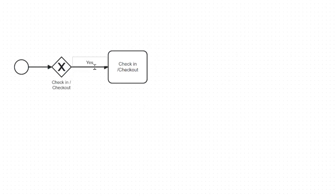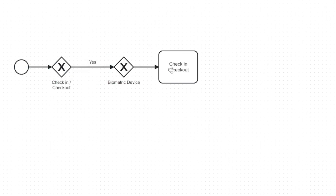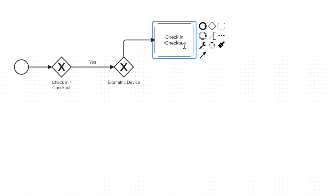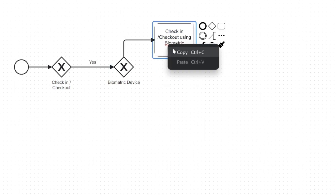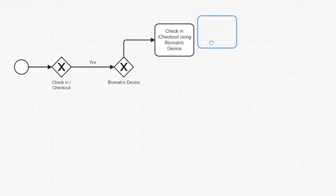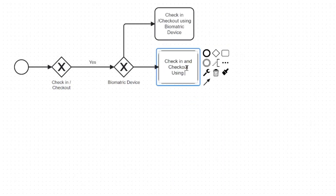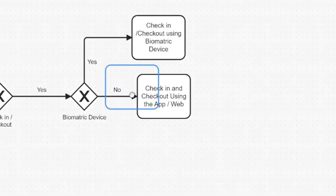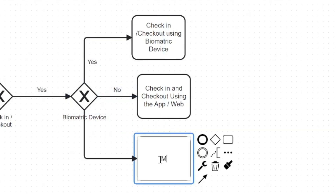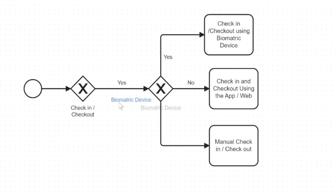If it is check-in and check-out, the person will check in and check out. If a biometric device is available, the person will use it. If not, there is an option to check in and check out directly in the system using an app or web. Another way would be manual check-in and check-out, where a supervisor notes down the time and updates or uploads the data via Excel sheet on a daily basis.